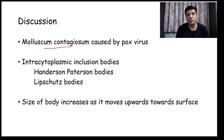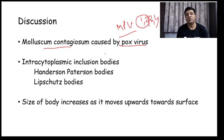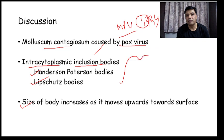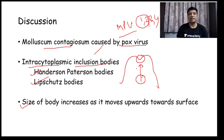Molluscum contagiosum is caused by pox virus, also called molluscipox virus. It is of four types; types one and two are the most common cause. It has an intracytoplasmic inclusion body called Henderson-Petterson bodies or lipschutz bodies, and the size of this body increases as it moves upwards towards the surface. There will be a dome-shaped pearly papule with an indentation at the top, from which the Henderson-Petterson body is extruded.